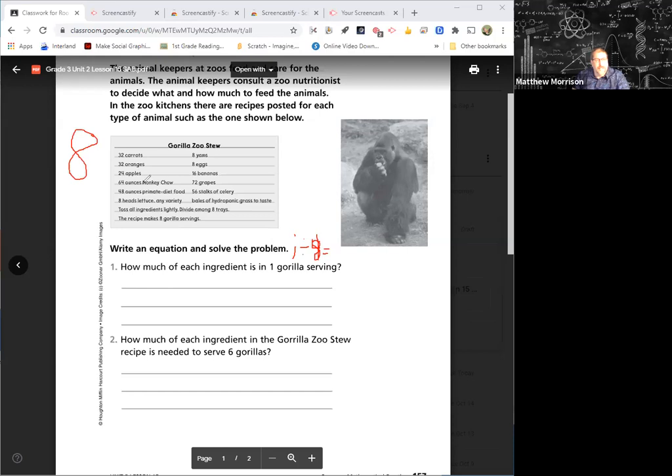When we look at each of these answers up here, we have to divide by eight. I'm not going to make you write an equation for each—there's a lot of equations. So you just have to divide them by eight. We have 32 carrots divided by eight, so what is 32 divided by eight? Four carrots. How many oranges? Four oranges. 24 divided by eight is three apples. We have 64 ounces monkey chow, so 64 divided by eight is eight ounces monkey chow.